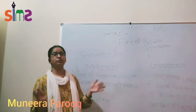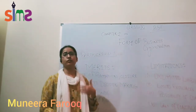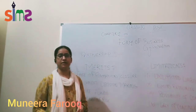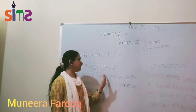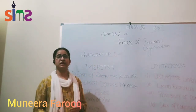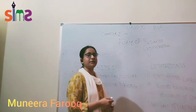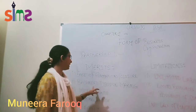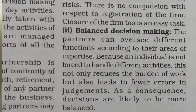Why is it easy? Because there is a number of partners, whether it is 2, 4, 40, 50, or up to 100. So it is easy to open a partnership firm. There is no single responsibility for decision-making. All of our partners take the decision, and the responsibility is equal to the risk.